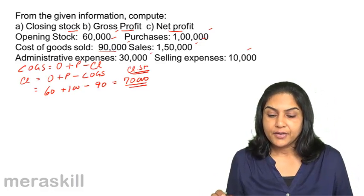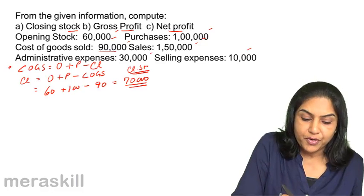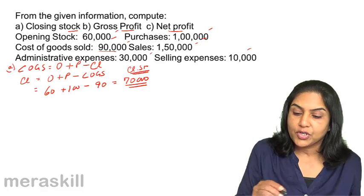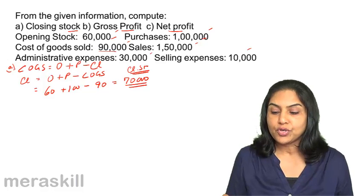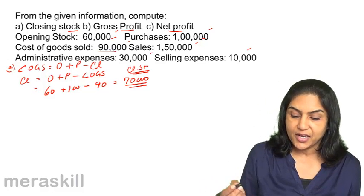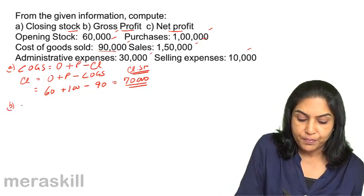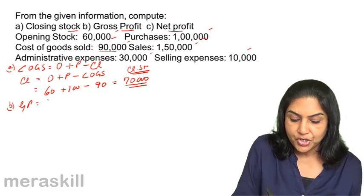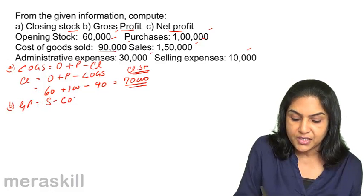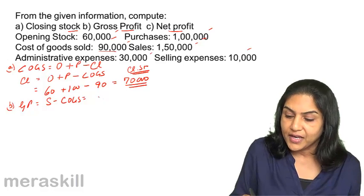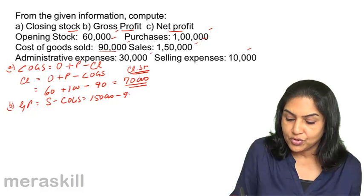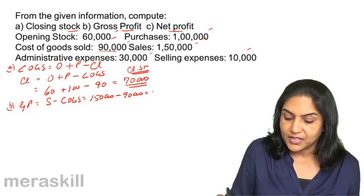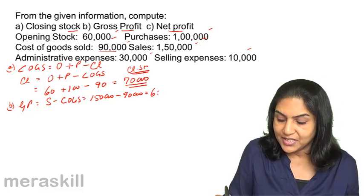Next, we need to find out gross profit. What is gross profit? Sales minus cost of goods sold should give us gross profit. Sales is given, cost of goods sold is given. So, gross profit should be equal to sales minus cost of goods sold, that is 1,50,000 minus 90,000, that is equal to 60,000.